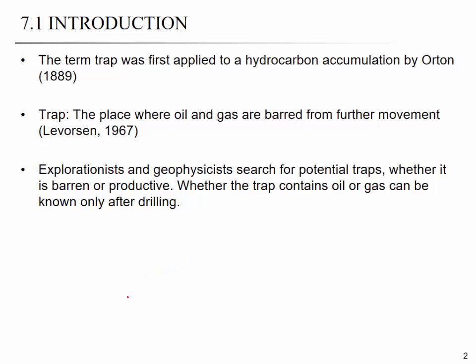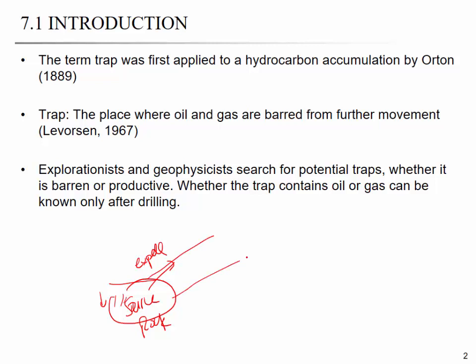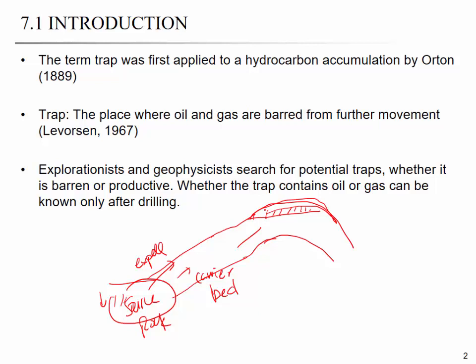If this is the source rock, as it gets compacted, it expels the hydrocarbon to the shale. Then this hydrocarbon will flow through the carrier bed — that's called primary migration. Then it will migrate to some structure and get accumulated. That accumulation is in the trap — this is the trap structure.